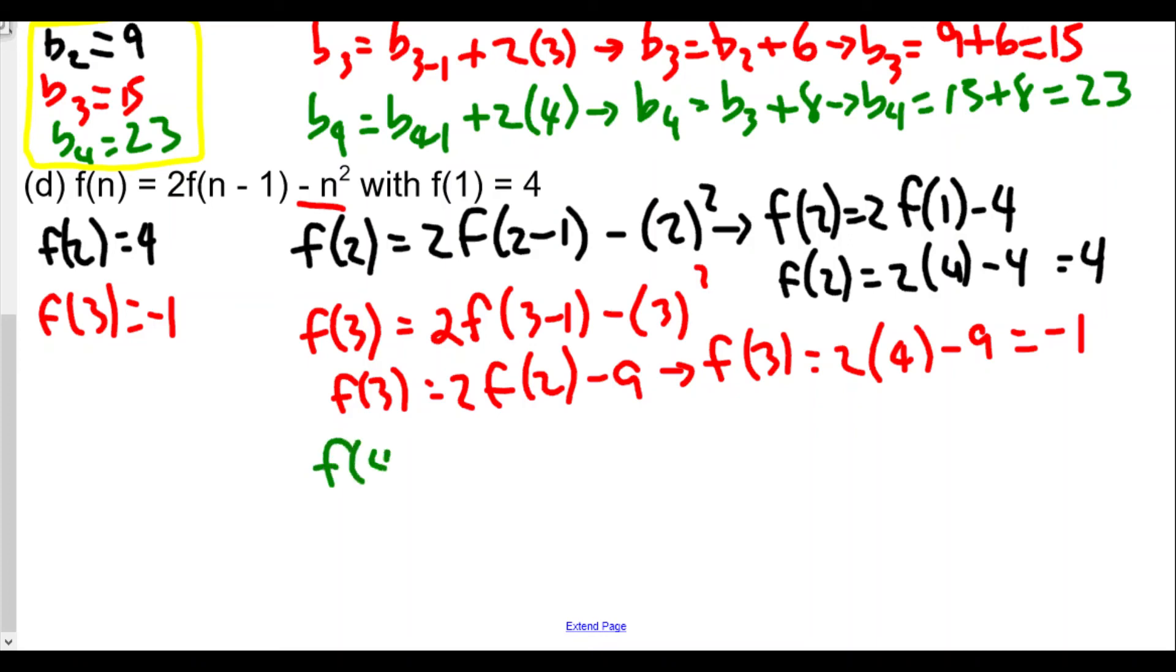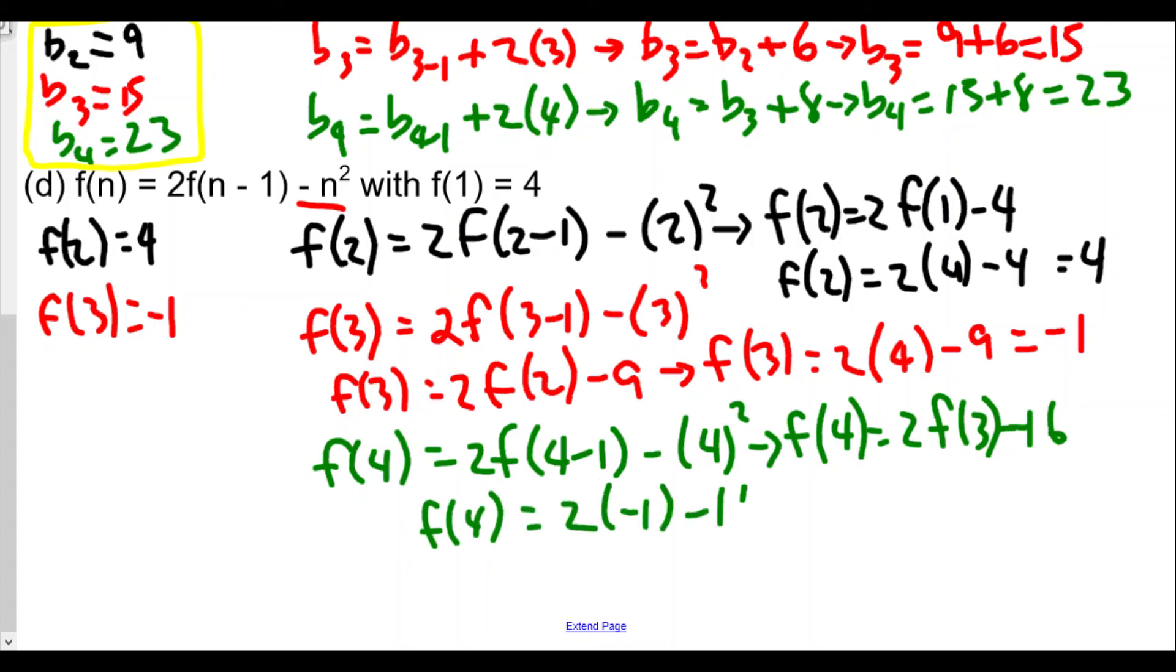Now we find the fourth term. f4 equals 2 times f(4-1) minus 4 squared. Notice that we're going to be constantly plugging in the n first and then multiplying each way. So we say f4 equals 2 times f3 minus 16. So that means f4 equals 2 times negative 1 minus 16, which is negative 2 minus 16 equals negative 18. And so the fourth term of the sequence is negative 18.